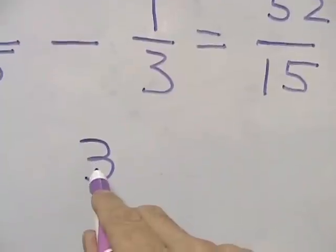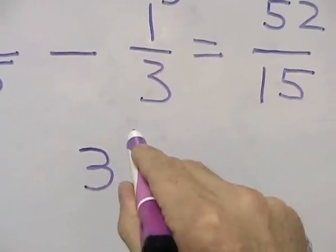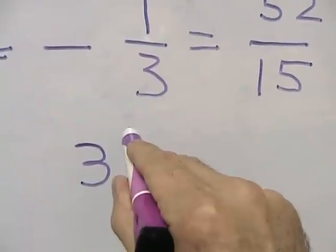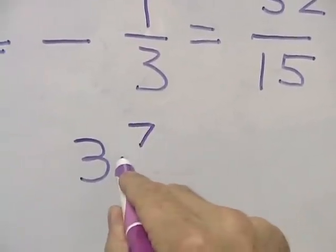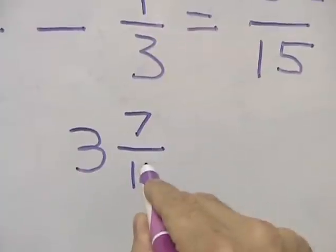This becomes our whole number. There's 7 left over from 45 to 52. That becomes our new numerator. We put down our denominator of 15.